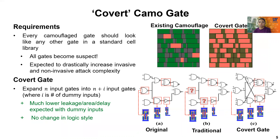We developed what we call the covert gate, which fulfills the above requirements. A covert gate doesn't have multiple functionalities; rather it consists of dummy inputs. These dummy inputs have no effect on the real design but are completely indistinguishable from normal inputs under SEM. Since every gate can potentially have dummy inputs, the attacker now needs to model and attack every single gate in the design.